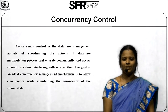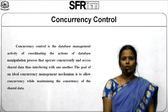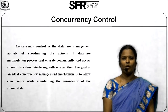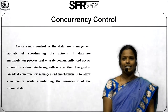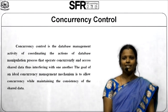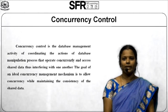Now let us see Concurrency Control. Concurrency Control is the database management's activity of coordinating the actions of database manipulation processes that operate concurrently and access shared data without interfering with one another. The goal of the ideal Concurrency Control mechanism is to allow concurrency while maintaining the consistency of the shared data.